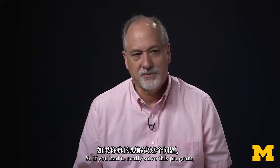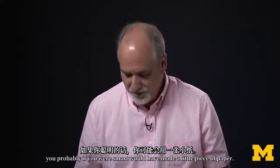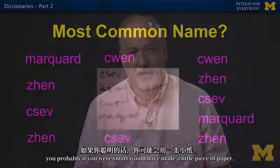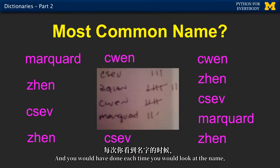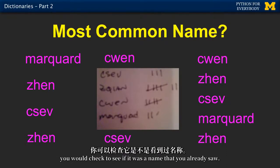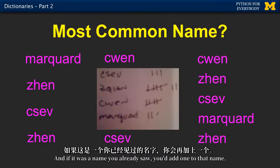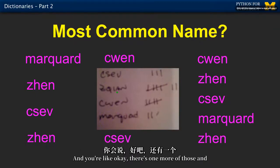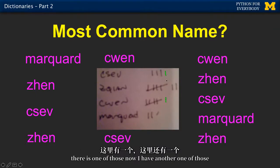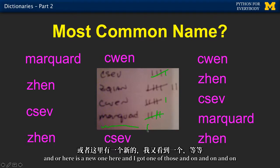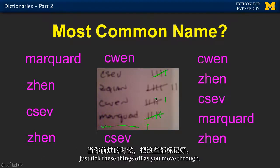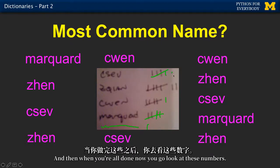So if you had to really solve this problem, you probably, if you were smart, would have made a little piece of paper and drawn a little picture like this. Each time you would look at the name, you would check to see if it was a name you already saw. If it was, you'd add one to that name. There's one of those, and one of those, and two of those. Or here's a new one — I got one of those, and on and on. Just tick these things off as you move through, and then when you're all done, you go look at these numbers.